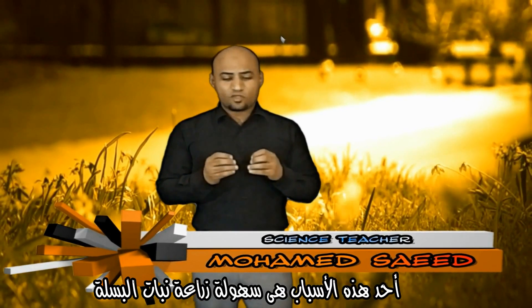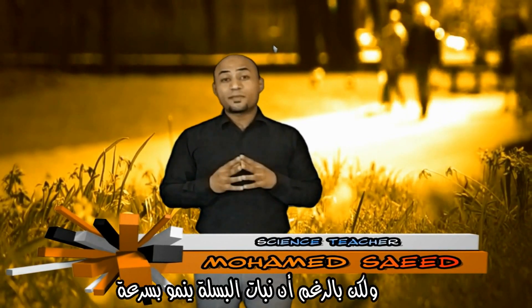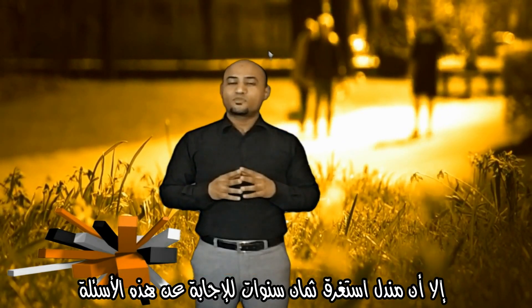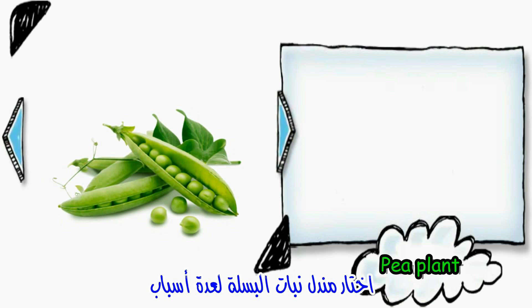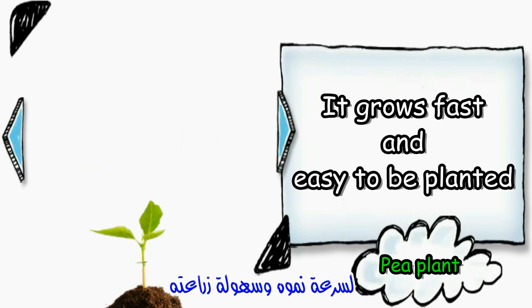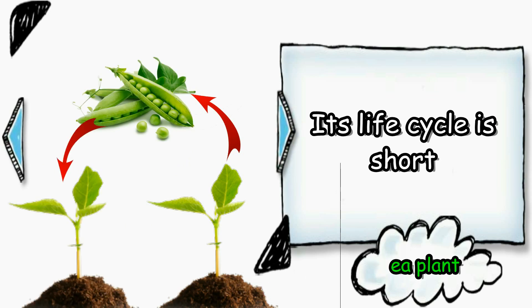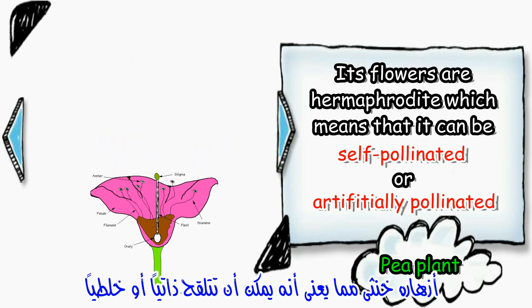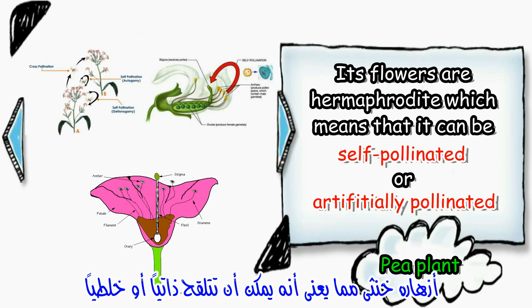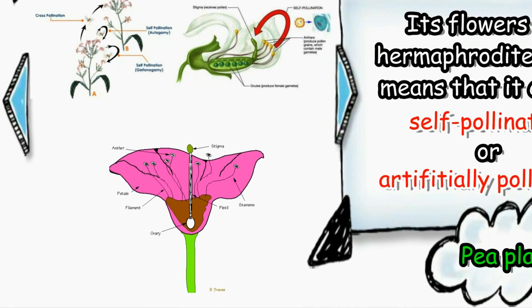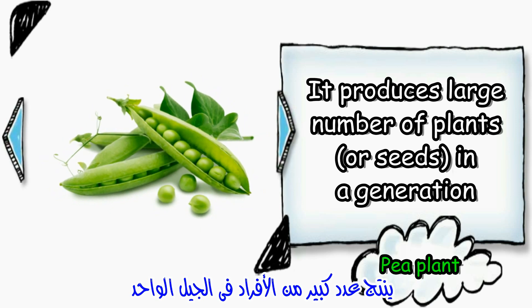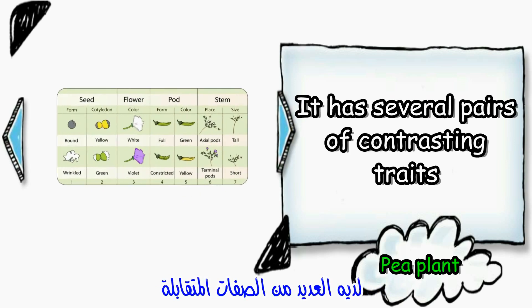To answer these questions, Mendel chose pea plants for several reasons. Pea plants are easy to breed, and the life cycle is short; they also grow fast. Their flowers are hermaphrodite, which means they can be self-pollinated or artificially cross-pollinated. Pea plants produce a large number of plants or seeds in a generation, and they have several pairs of contrasting traits.